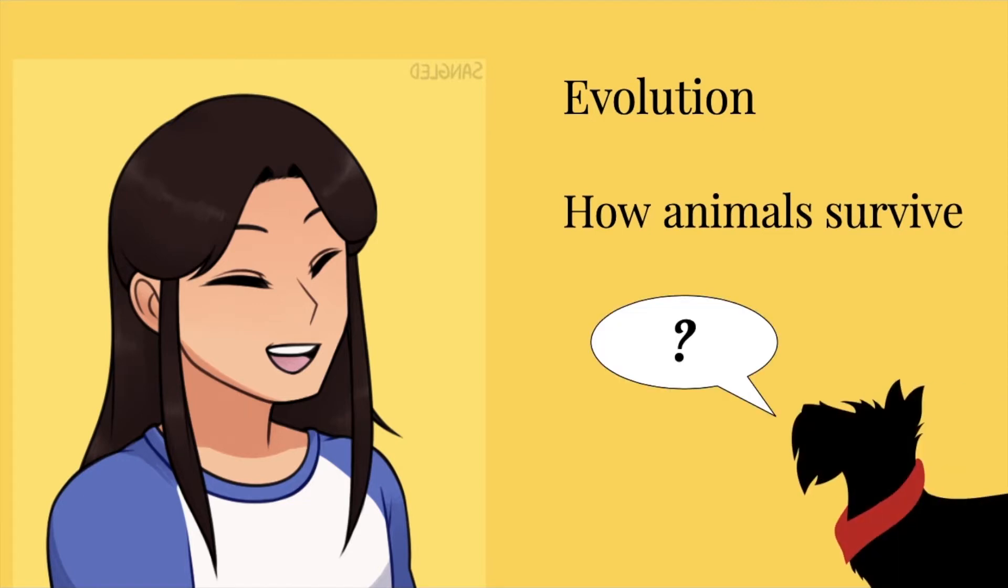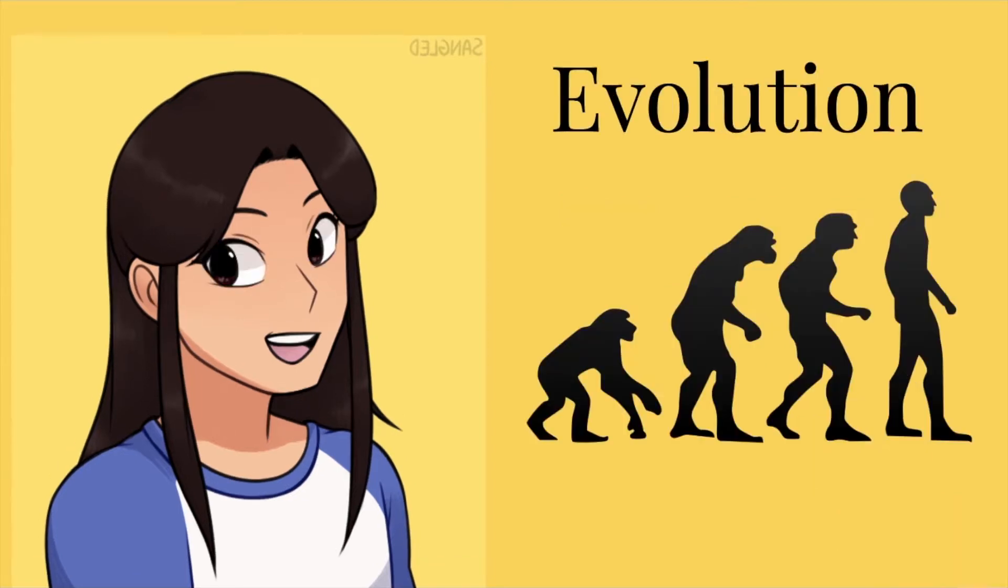What's evolution? What does that have to do with animals like me? Well, Scotty, evolution is the process of how organisms change their features over time from generation to generation to survive better in where they live. Like, your great-great-great-great-grandparents may look a lot different than how you look now just because they lived in a different time.